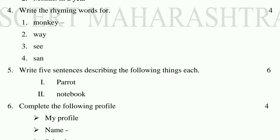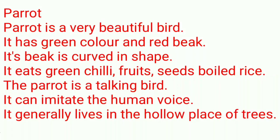Question 5: Write five sentences describing the following things. This question is for six marks. First is about a parrot — write five lines about it for three marks. Second is about a notebook — write five sentences in English for three marks.